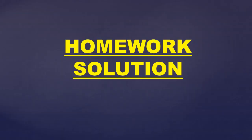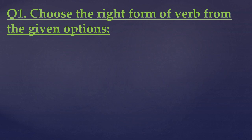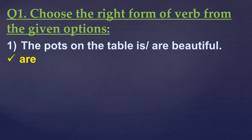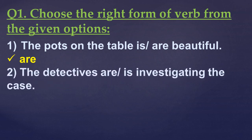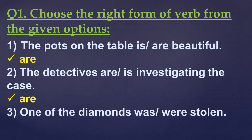Now for the homework solution. I gave you 10 sentences in the previous lecture. The question was to choose the right form of the verb from the given options. Sentence 1: 'The pots on the table are beautiful' — plural subject, plural verb. Next: 'The detectives are investigating the case' — again plural. Next: 'One of the diamonds was stolen' — the subject 'one' is singular, so singular form of the verb, even though the phrase has a plural noun.